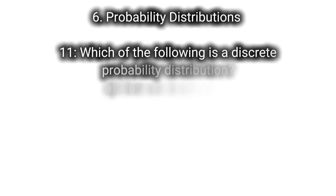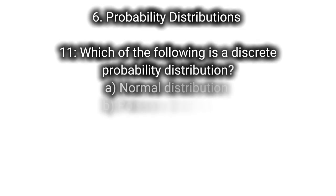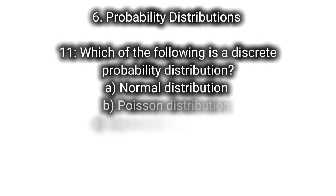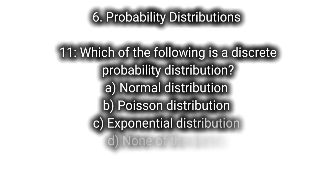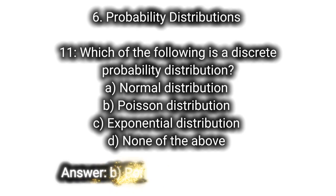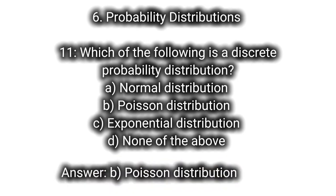6. Probability distributions. Q11: Which of the following is a discrete probability distribution? A. Normal distribution, B. Poisson distribution, C. Exponential distribution, D. None of the above. Answer: B. Poisson distribution.